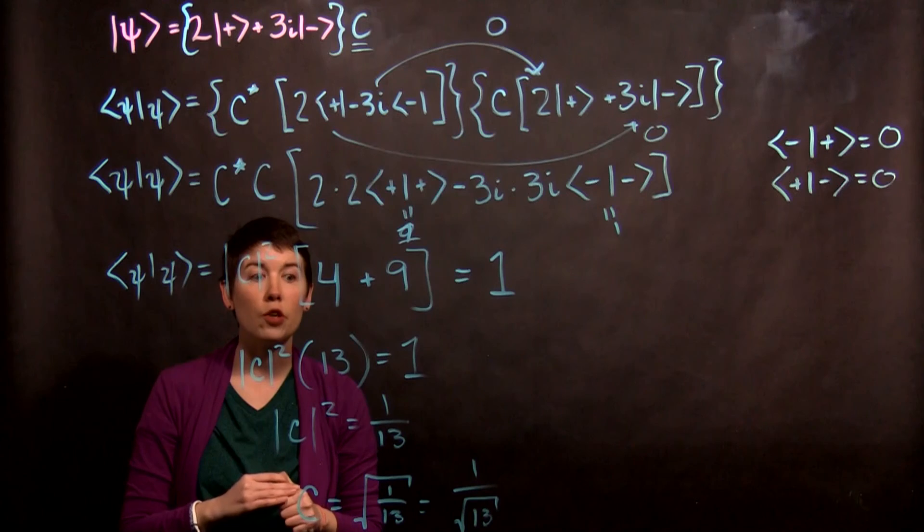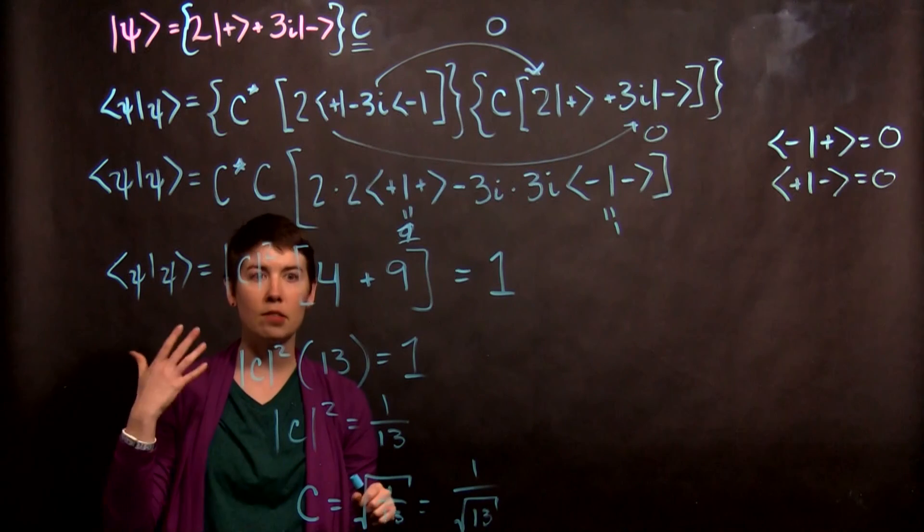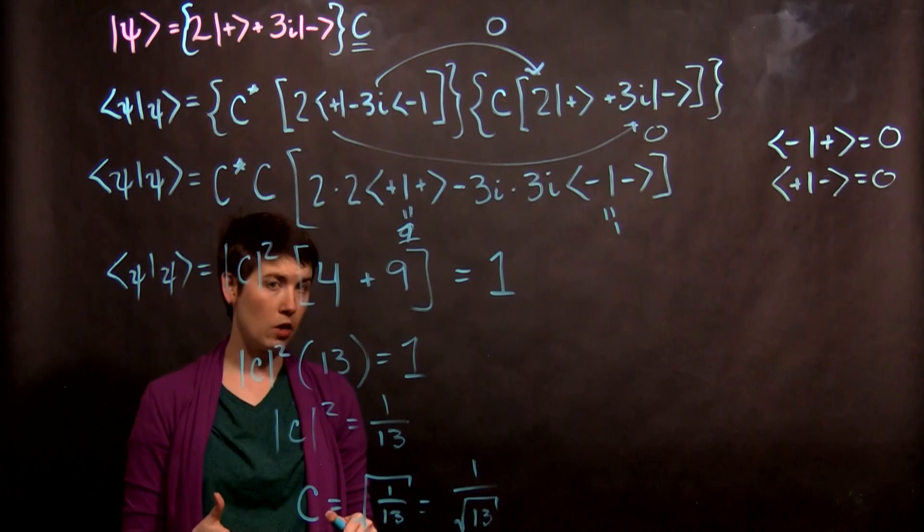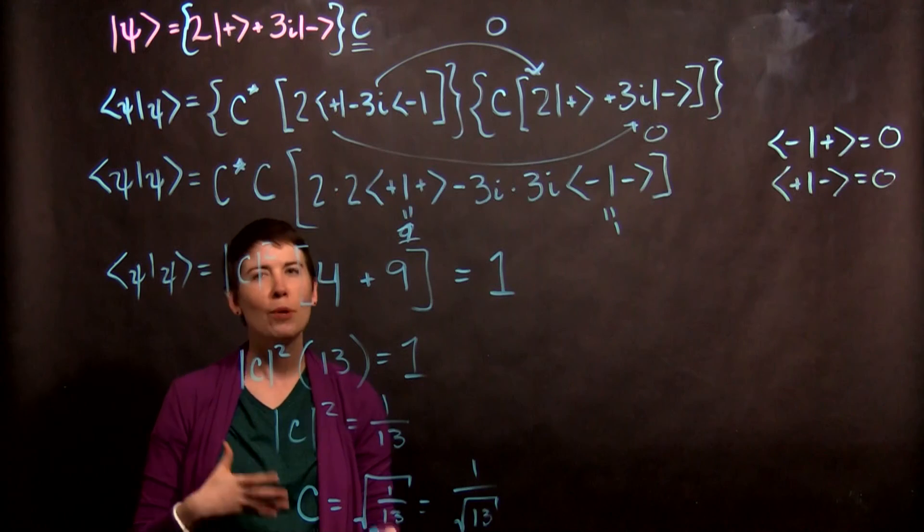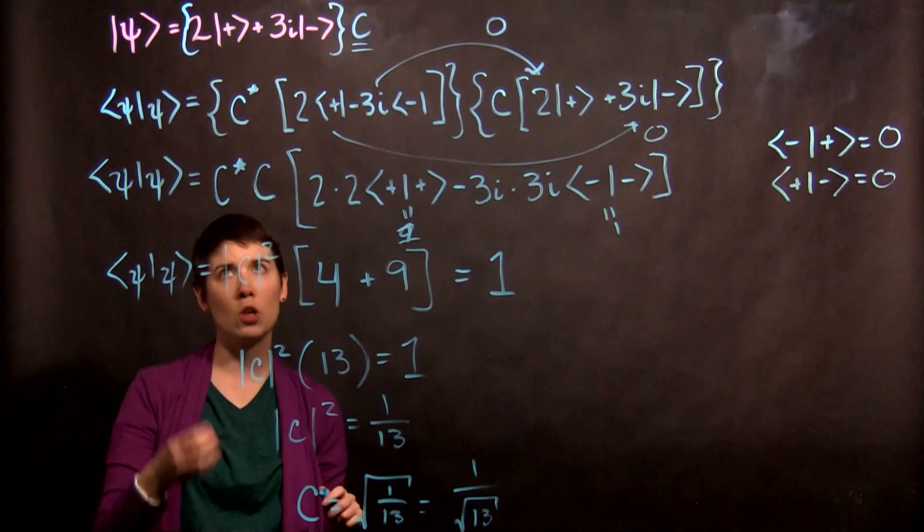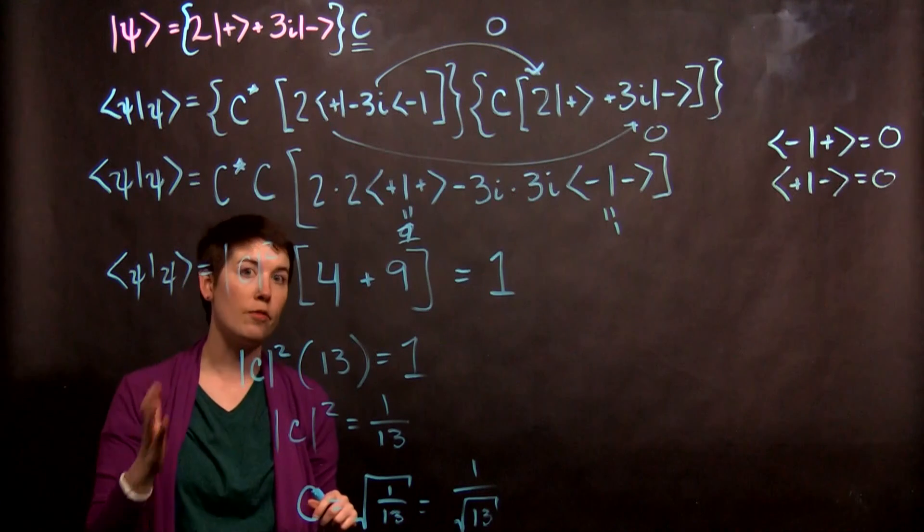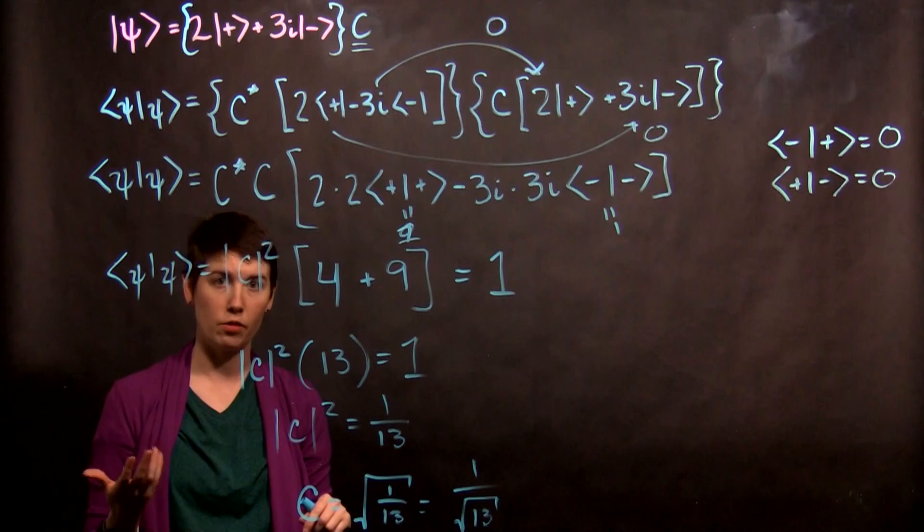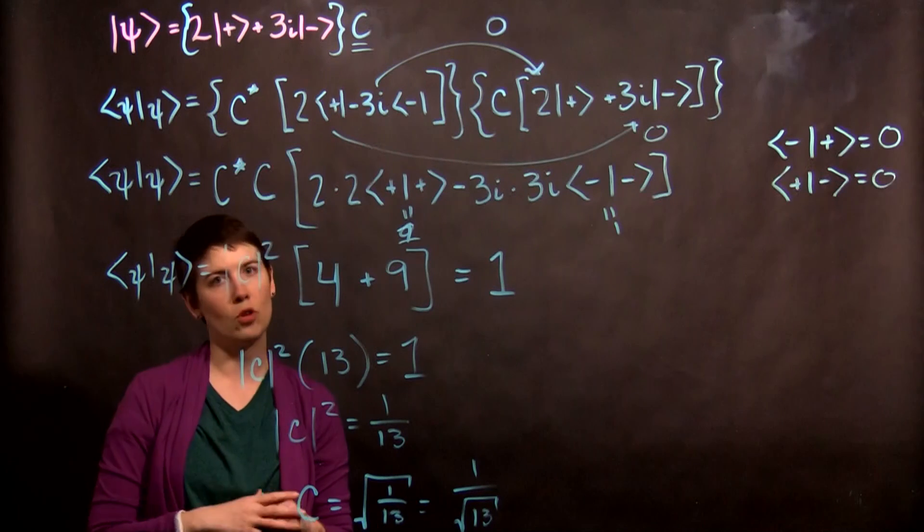So this is our starting point now. We have a normalized state. And from this we can talk about individual measurements. But it wouldn't have made sense to do that before normalizing it. So in the next video we can now talk about the probability of measuring spin up and measuring spin down from this state based on the normalized vector.